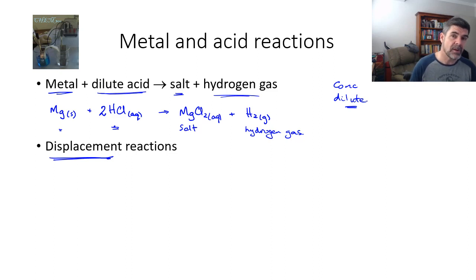There's a way we can show that with an ionic form of this equation. Now magnesium, when it is a solid, is not in ionic form. But the aqueous solution of acid is. So we can write that as 2H+ and 2Cl-.